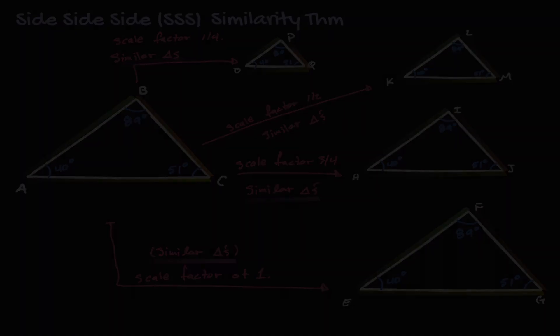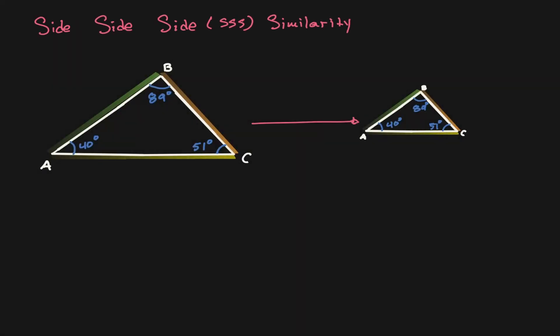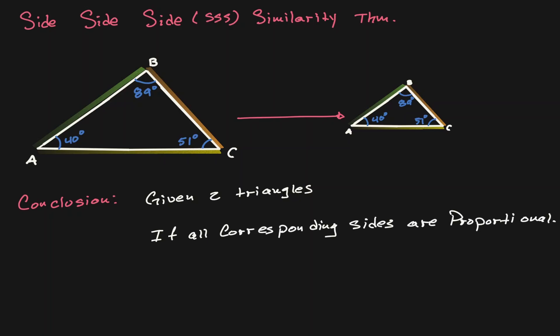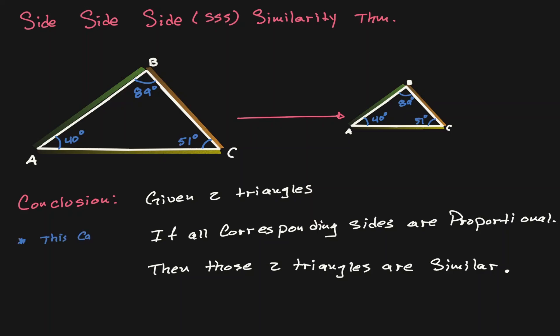Let's write down our conclusion. Given two triangles, if all corresponding sides are proportional, then we can conclude that the triangles are similar to each other. The idea behind it is that if all corresponding sides are proportional to each other, then all corresponding angles are congruent to each other. By definition, if all sides are proportional and all interior angles are congruent, then the figures are similar, and we can conclude that we have two similar triangles.